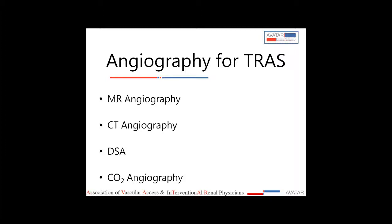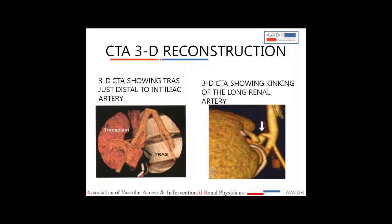MR and CT angiography are for screening and are done mainly when Doppler does not give enough information. However, both investigations cannot be performed when the patient has significant renal dysfunction. So if there is high suspicion of renal artery stenosis with significant renal dysfunction, we proceed directly to digital subtraction angiography or CO2 angiography if the facility is available. A CT 3D reconstruction image shows how well renal artery stenosis can be visualized, but many patients cannot have this done due to the volume of contrast required. A case of renal artery kinking post-transplant is also highlighted.